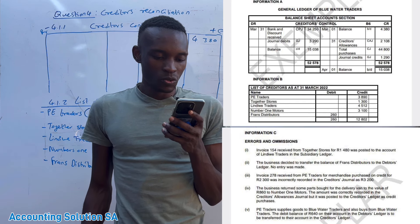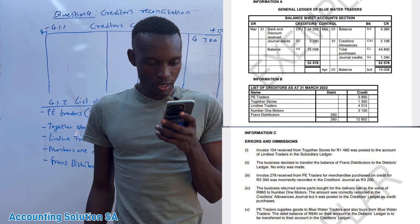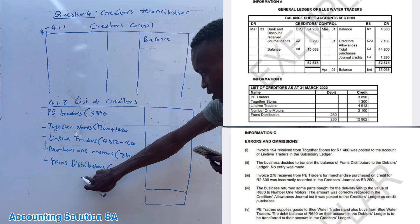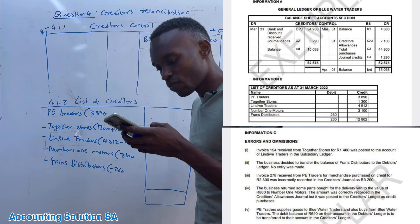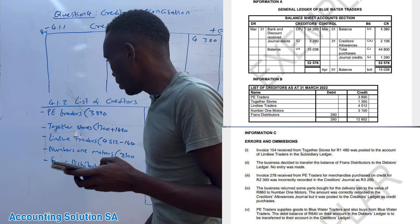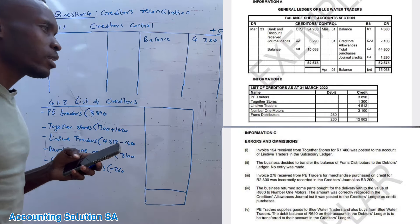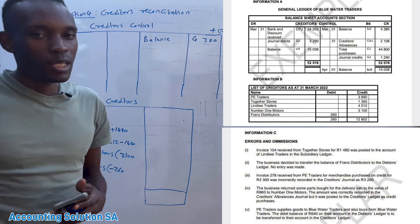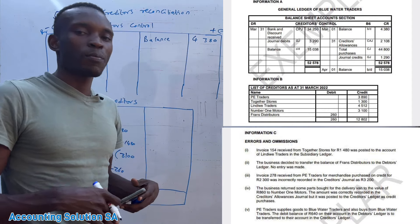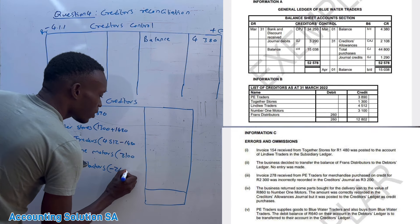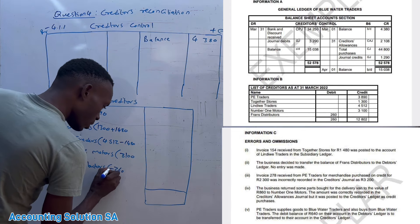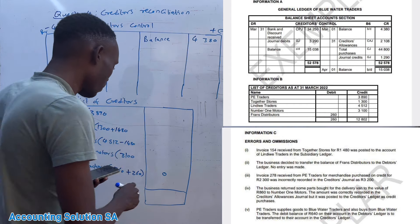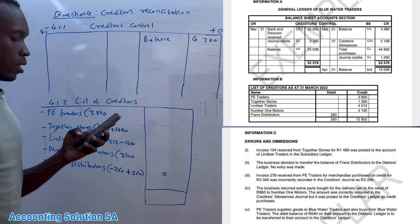Number two: the business decided to transfer the balance of France Distributor to the debtors ledger. Remember France Distributor is a creditor — our supplier — but they also buy from us, making them a customer. This balance has been transferred, meaning it is cancelled. To cancel the 30, we add positive 30 so it becomes zero, because we no longer have any transaction related to them.